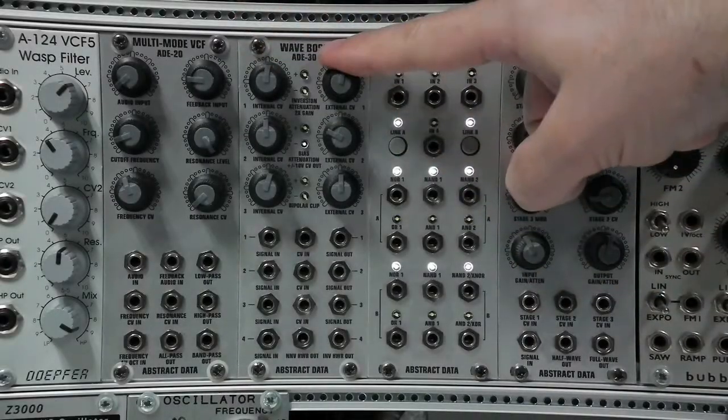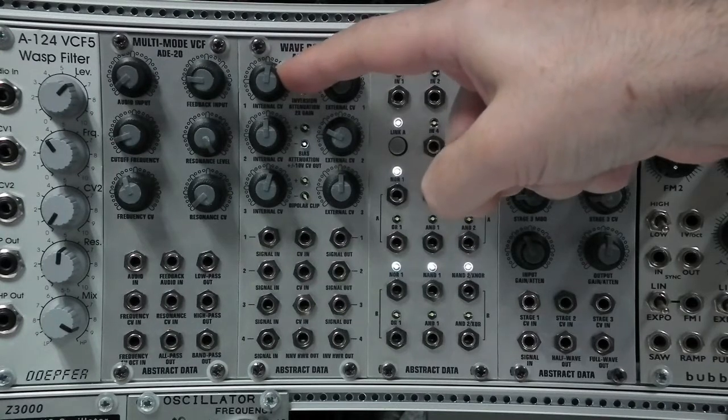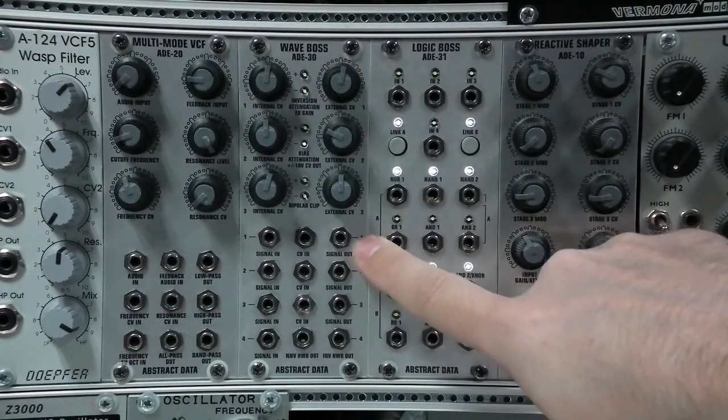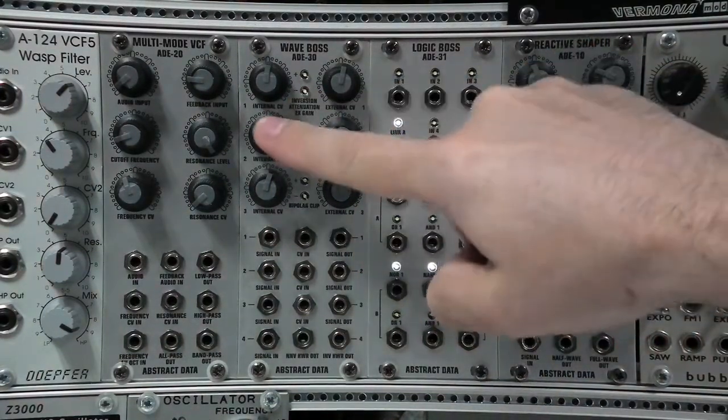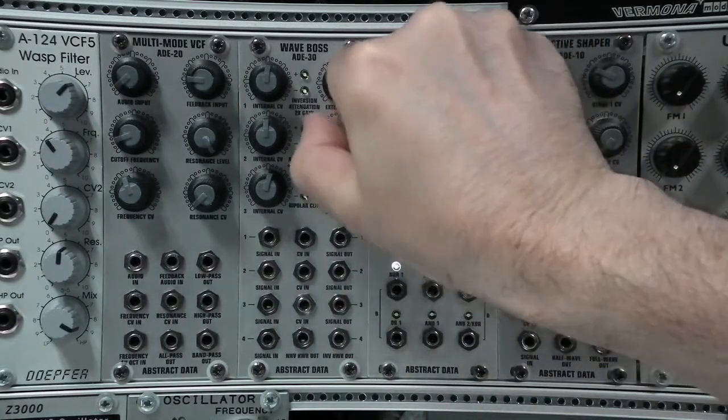Let's go through each stage. Stage one gives you gain, attenuation and attenuversion so you can output an inverted or a non-inverted version of the input waveform up to two times gain or down to 100% attenuation. Step two gives you biasing and offset, a CV output of plus or minus 10 volts and it will also act as another attenuator.